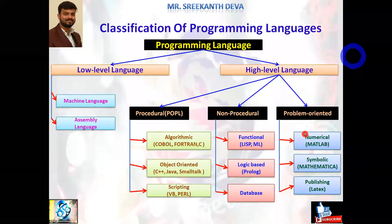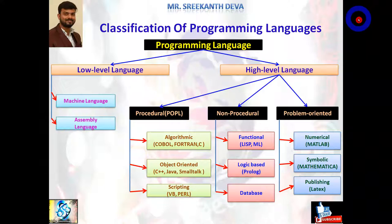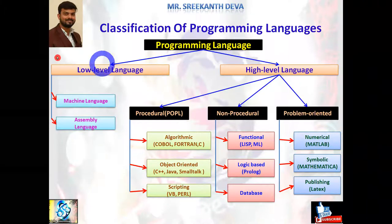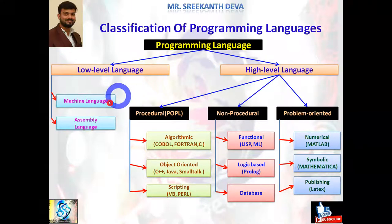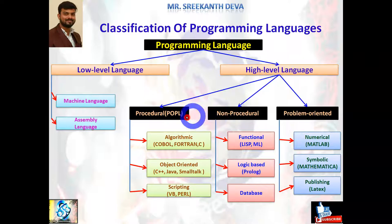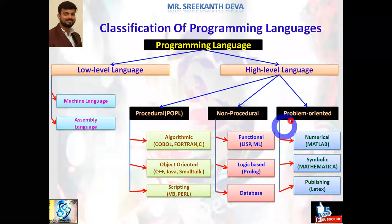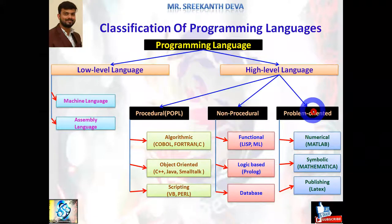Observe here: programming languages are majorly classified as low level language and high level language. Low level language is categorized into machine language and assembly language. High level language is categorized into procedural oriented programming language (POPL), non-procedural oriented programming language, and problem-oriented programming language.